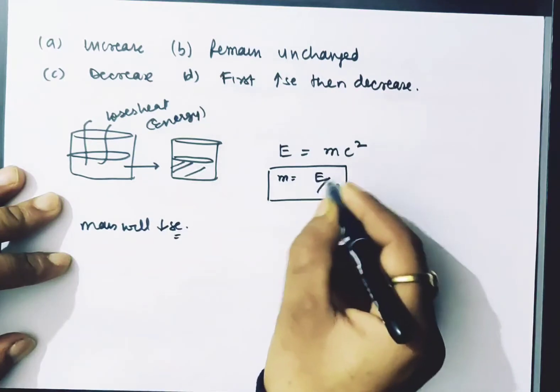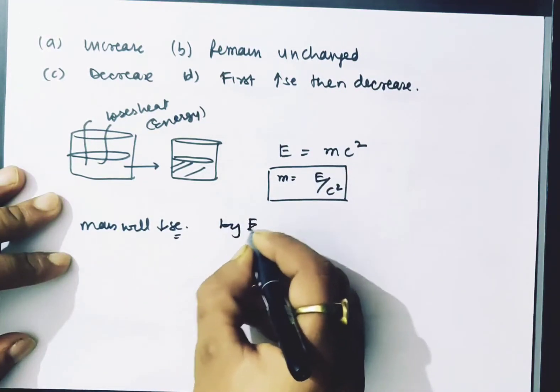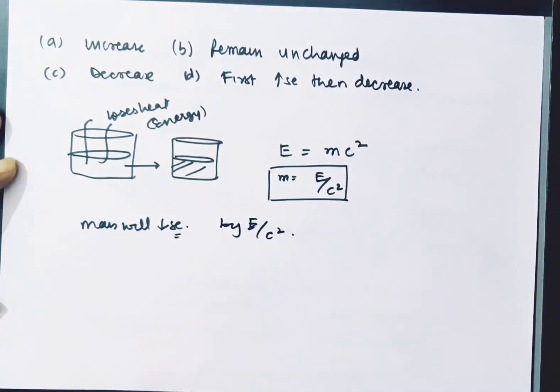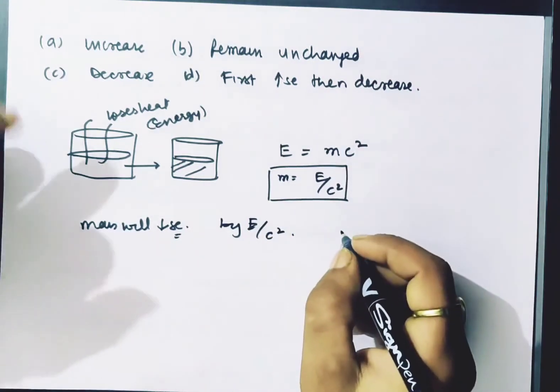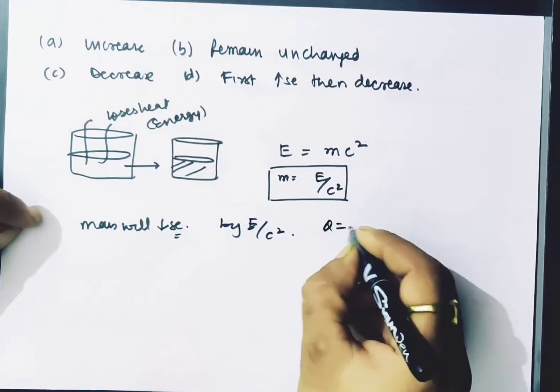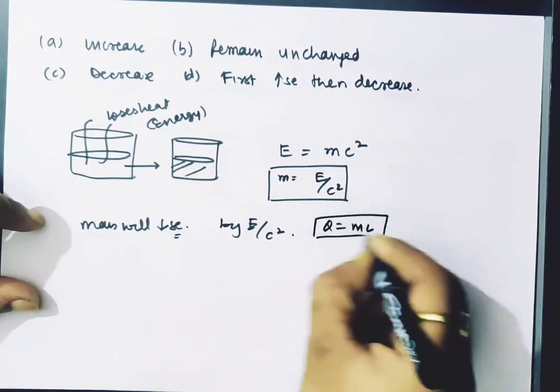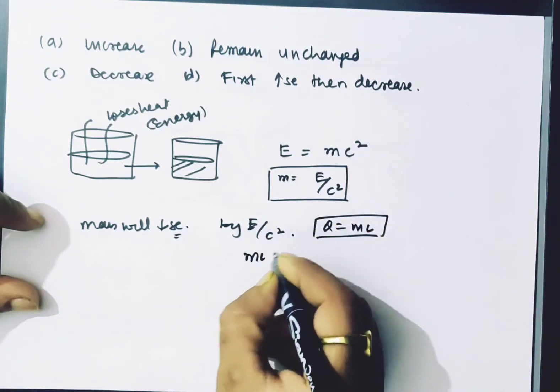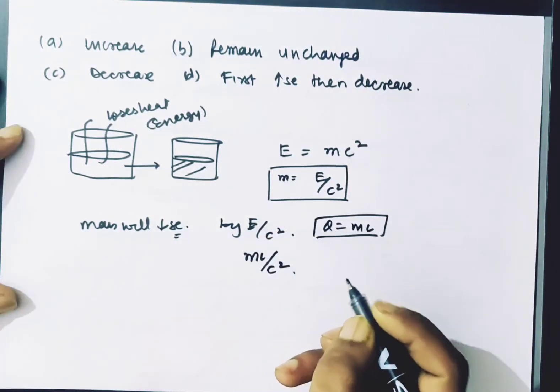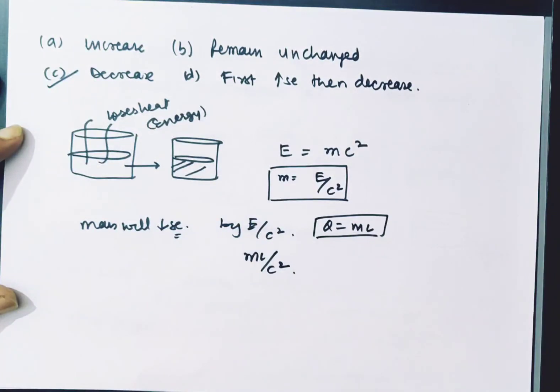And by how much? By E/c². You can also calculate using Q = ml. So you can write it as ml divided by c². That's the answer. Decrease is the correct answer.